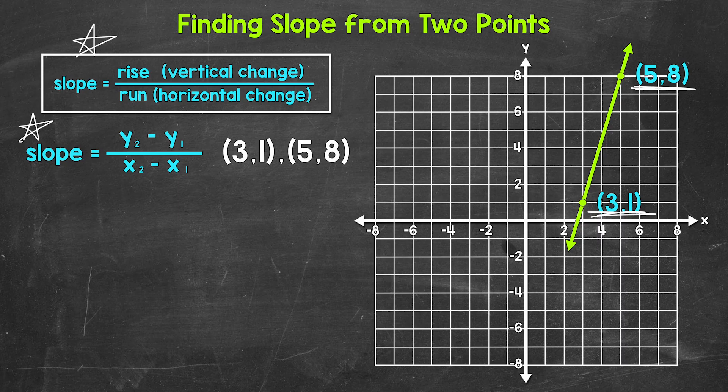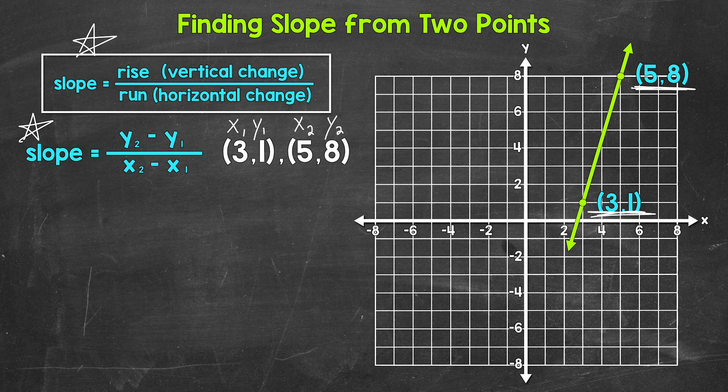Let's label these now. So for 3,1, 3 is our x-coordinate. So let's label that as x1. And then 1 is our y-coordinate. So let's label that y1. Now for 5,8. 5 is going to be x2. And 8 is going to be y2. Now all we need to do is plug these in to our formula.